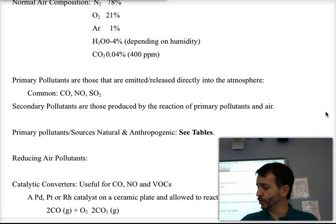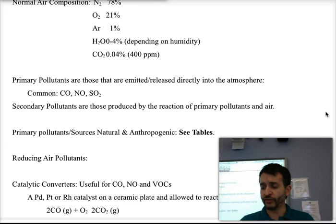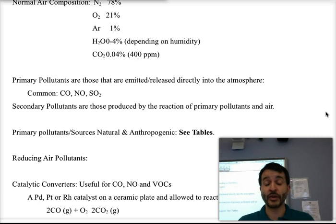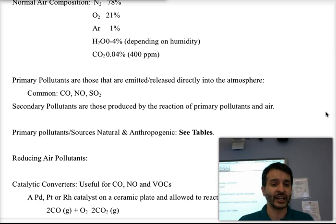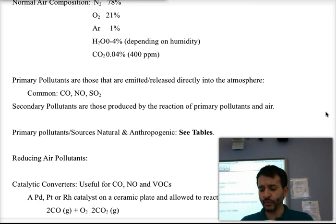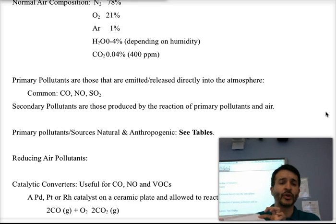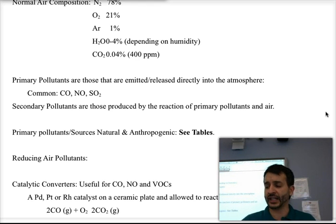I gave you a table talking a little bit about the sources of primary pollutants — whether they are natural sources or man-made, anthropogenic sources — and the effects on health and how we could control them. The table on the lower part covers carbon monoxide, nitrogen oxide, sulfur dioxide, particulates, and VOCs — volatile organic compounds.